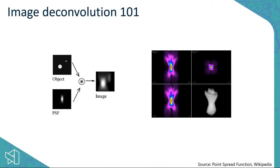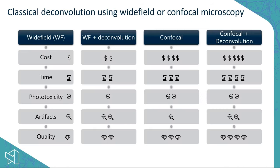If one can know what the point spread function is, and we already have an image, then we try to go back to creating a true image of the object — closer to the ground truth. Deconvolution using a measured or estimated point spread function is what I'm calling classical deconvolution. Here you can see how classical deconvolution can be used in both wide-field and confocal microscopy.